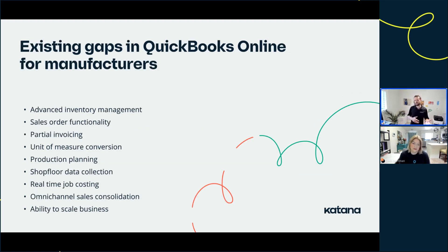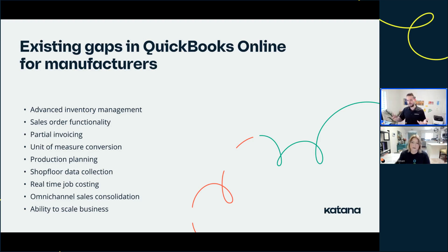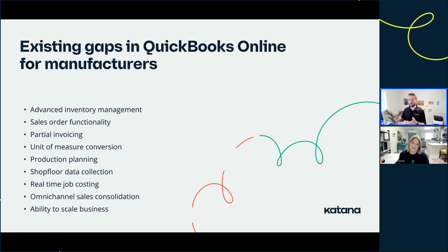Many businesses are open to moving to QuickBooks Online, but when they explore it they ask: where will I manage my inventory? Within QBO, there's no advanced inventory management, no sales order functionality, no partial invoicing, and unit of measure conversions are a challenge. By adding solutions like Katana into the QBO tech stack, you enable that functionality. It's a conceptual change — utilizing online technologies that integrate with QBO to allow the product to improve and scale the business.